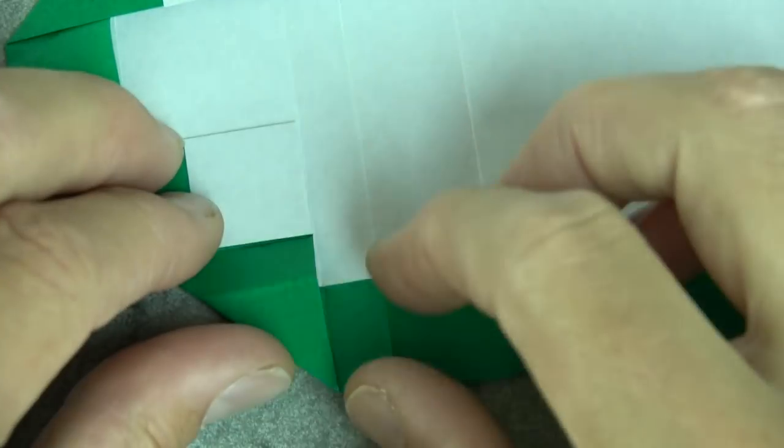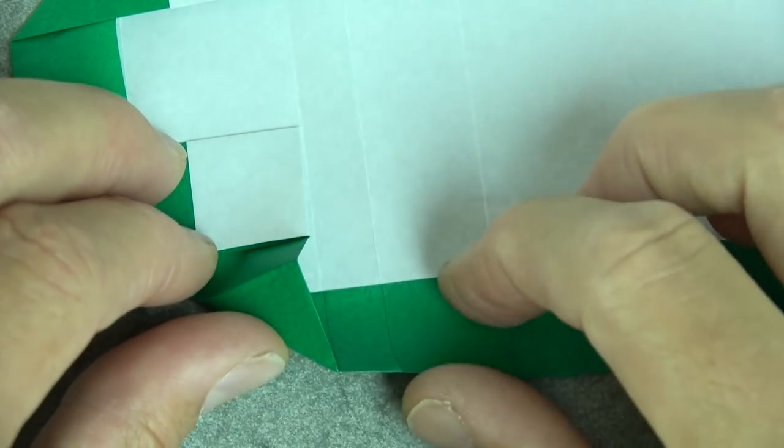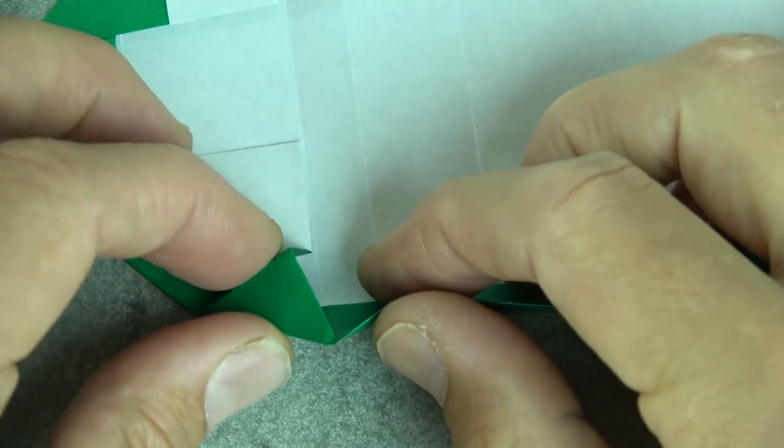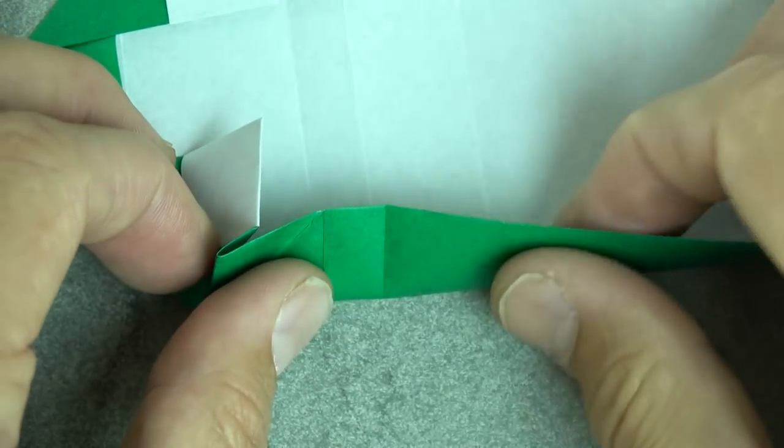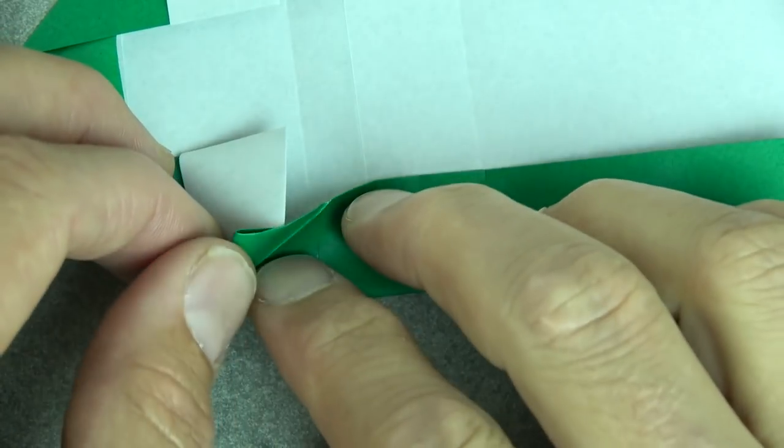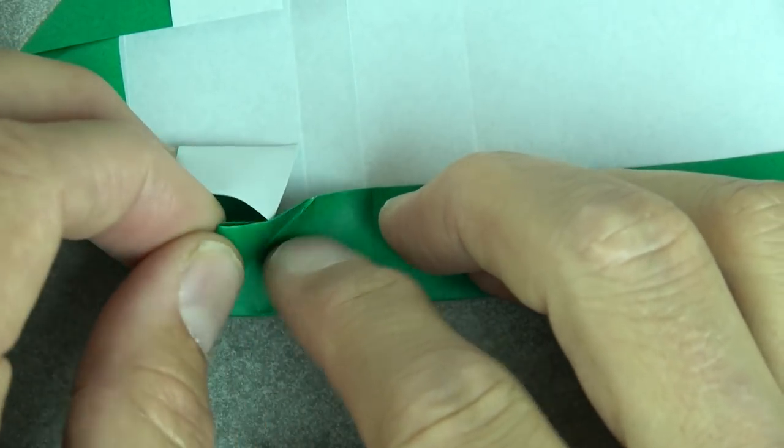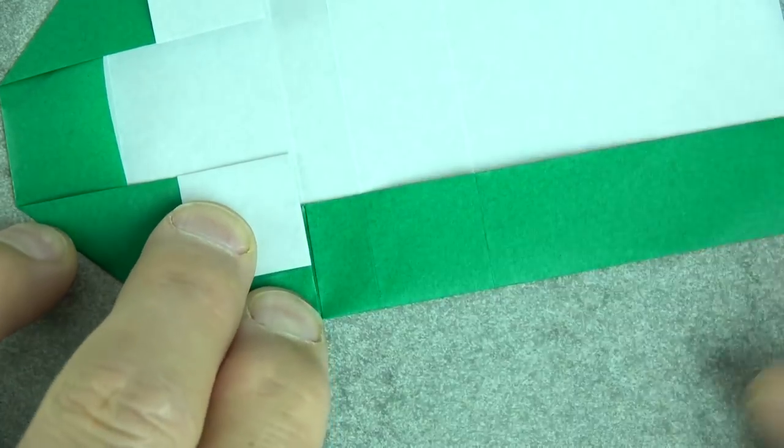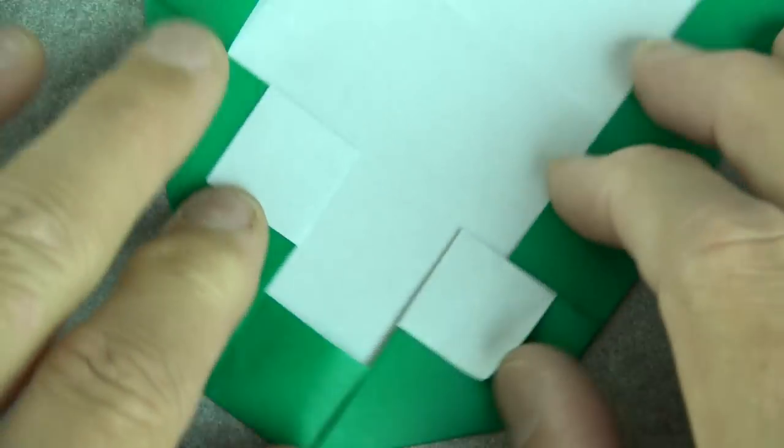So it looks like this. And now we're going to fold this down on this crease. And repeat on this side.